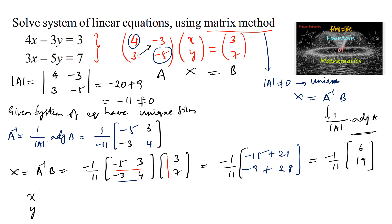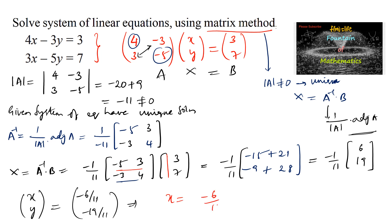So the variable matrix x equals negative 6 over 11 and negative 19 over 11. Comparing both matrices, the solution is x equals negative 6 over 11 and y equals negative 19 over 11.